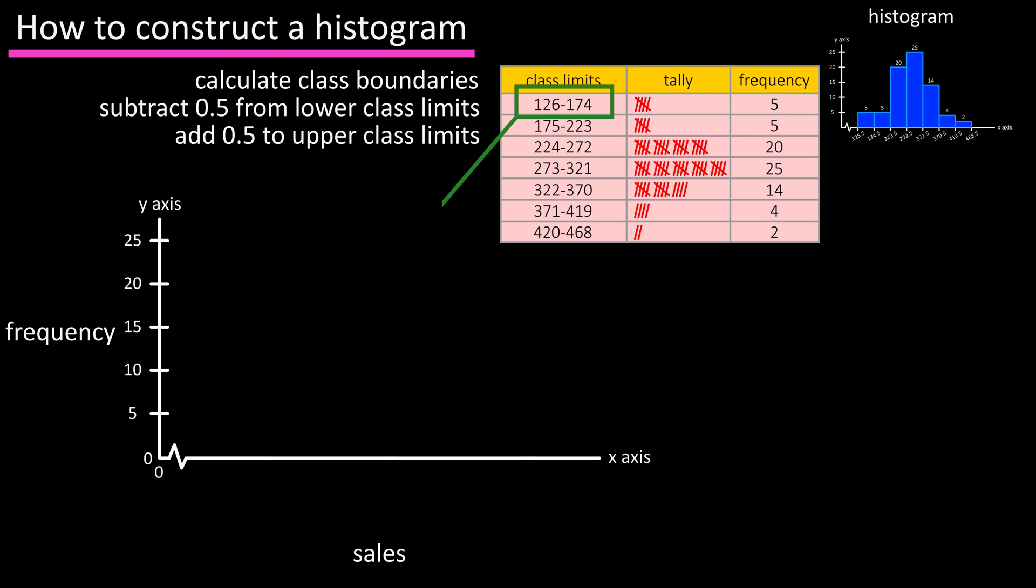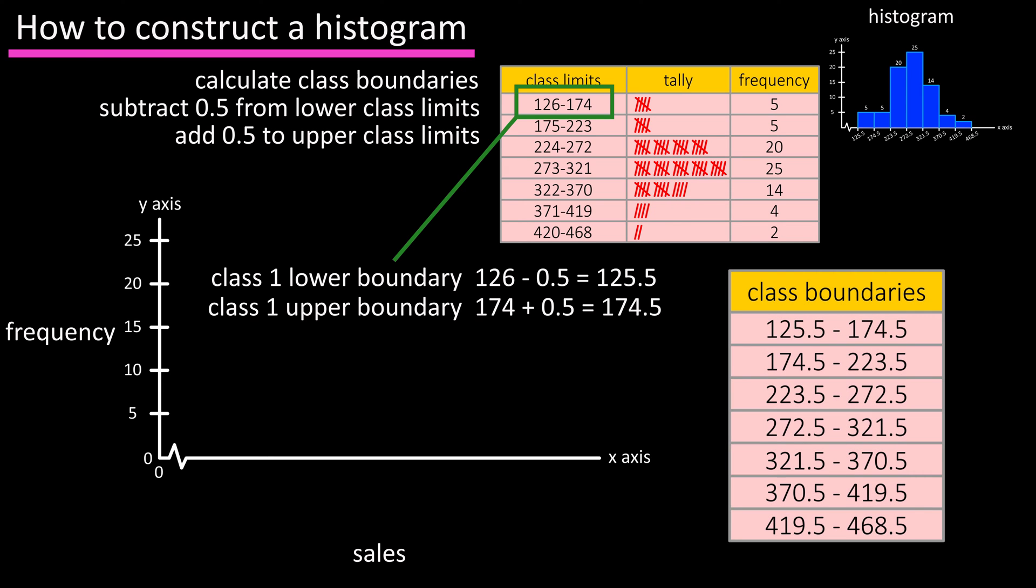So the boundaries for class 1 will be 126 minus 0.5 which equals 125.5 at the lower boundary, and 174 plus 0.5 which equals 174.5 as the upper boundary. And we'll do this for the six remaining classes as you see here in this table.